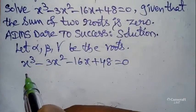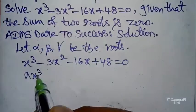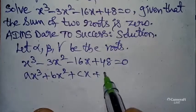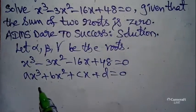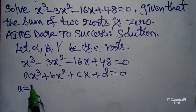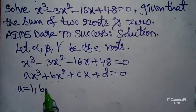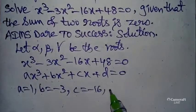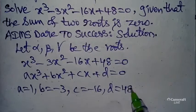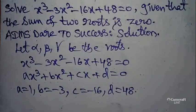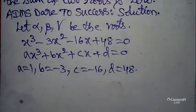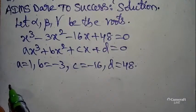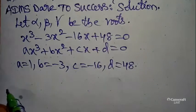This is in the form ax³ + bx² + cx + d = 0. So a = 1, b = -3, c = -16, and d = 48. Since we have three roots alpha, beta, gamma, we can use the standard formulas.